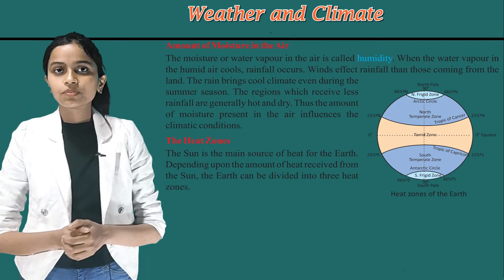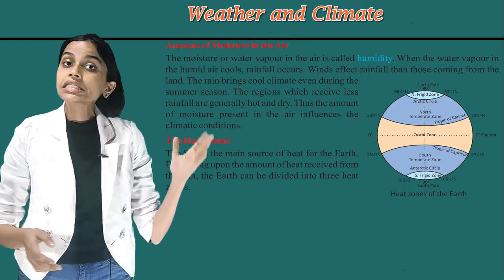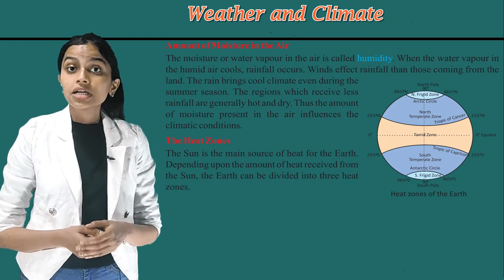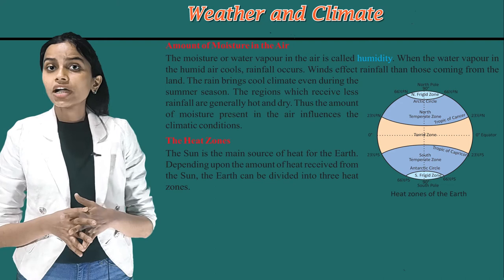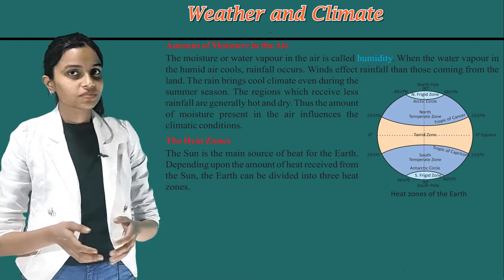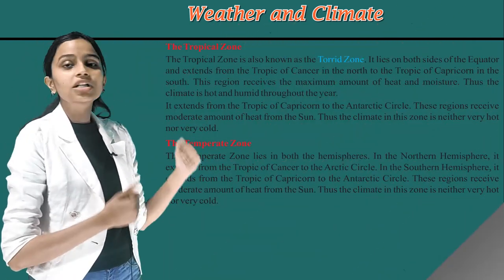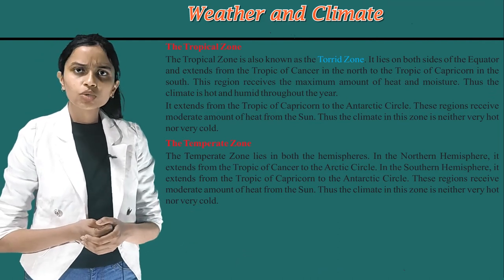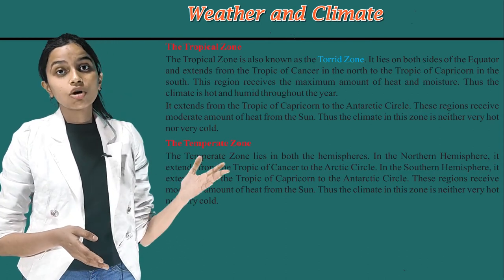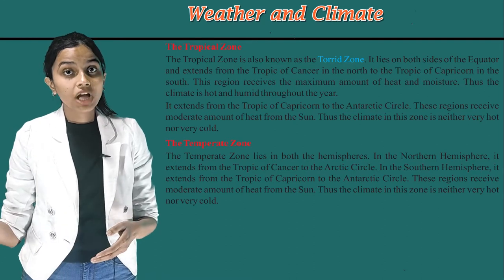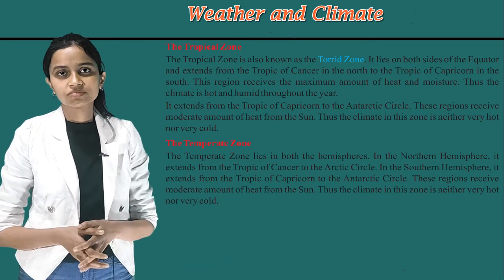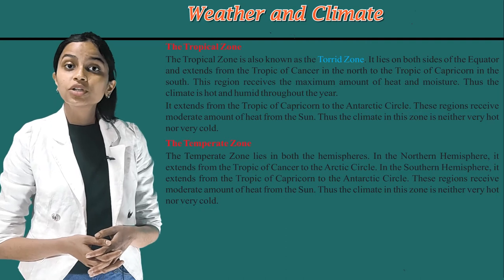Now, the heat zones. The sun is the main source of heat for the earth. Depending upon the amount of heat received from the sun, the earth can be divided into three heat zones. The first one is the tropical zone, also known as the torrid zone. It lies on both sides of the equator and extends from the Tropic of Cancer in the north to the Tropic of Capricorn in the south. This region receives the maximum amount of heat and moisture. Thus, the climate is hot and humid throughout the year.